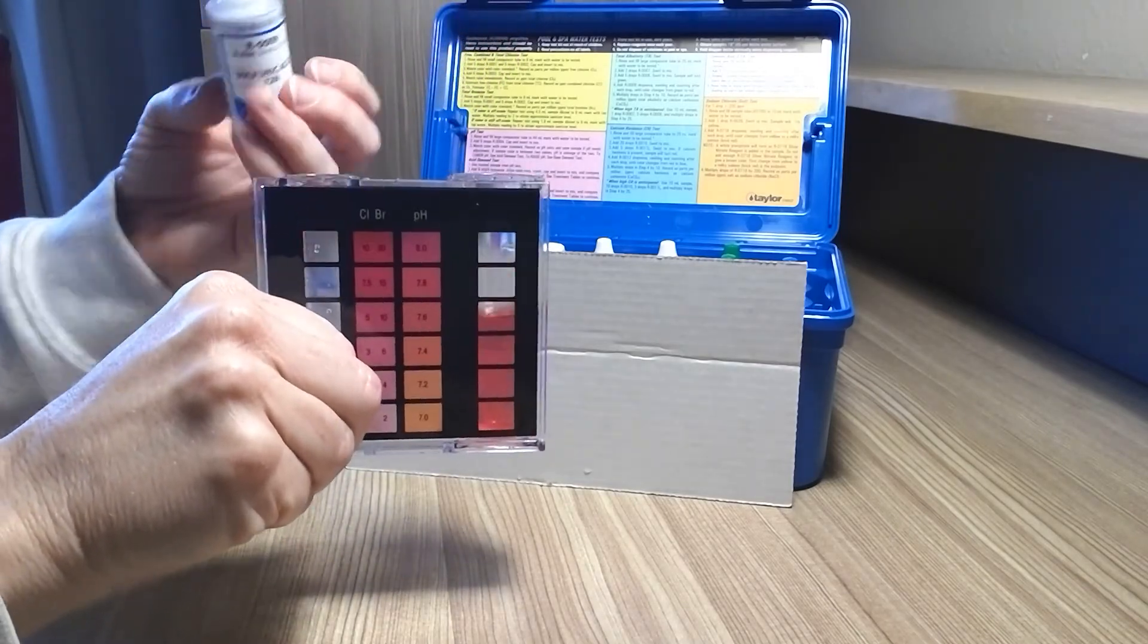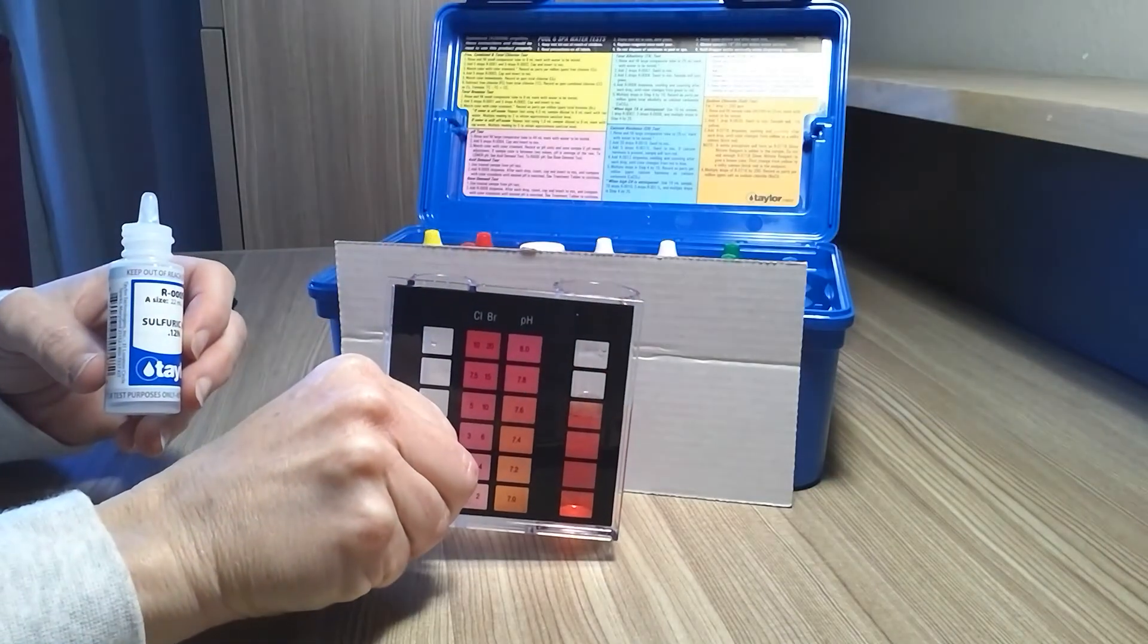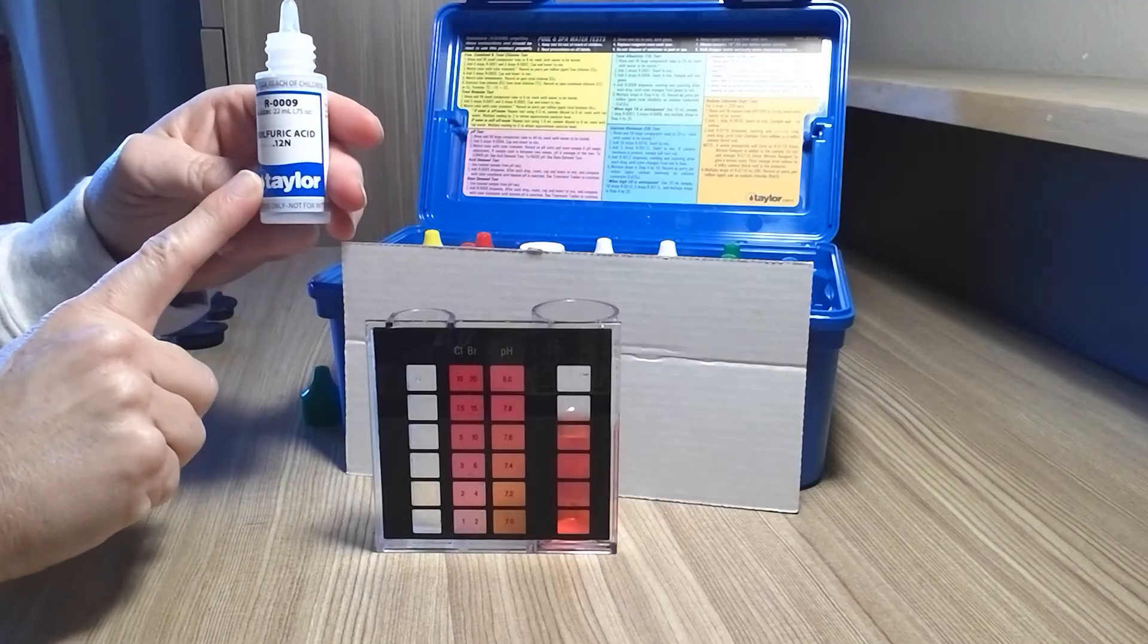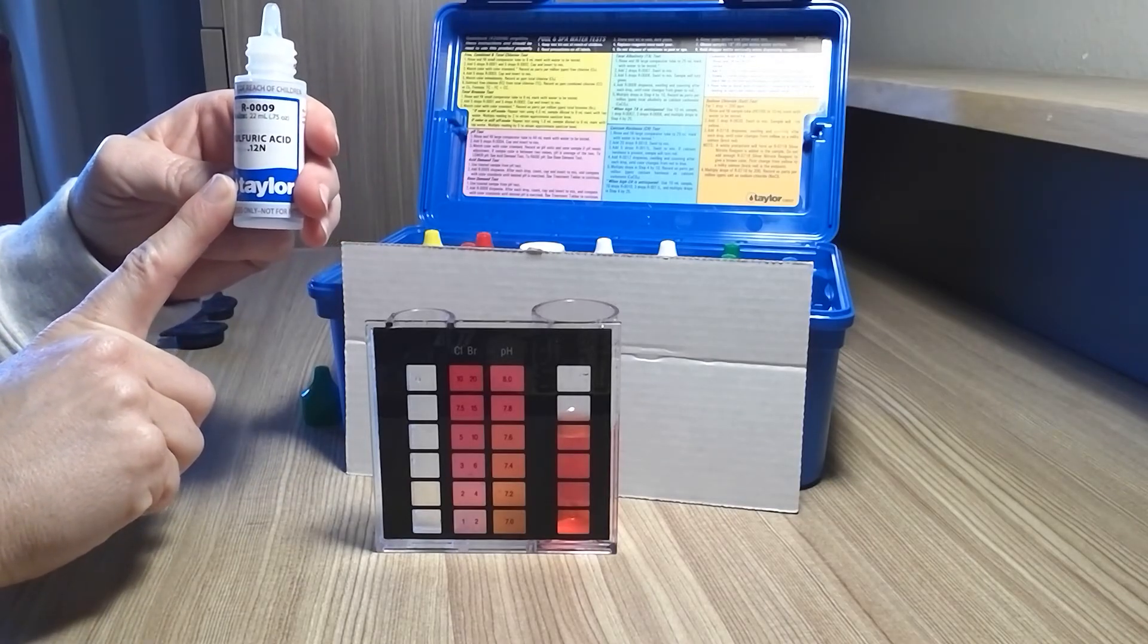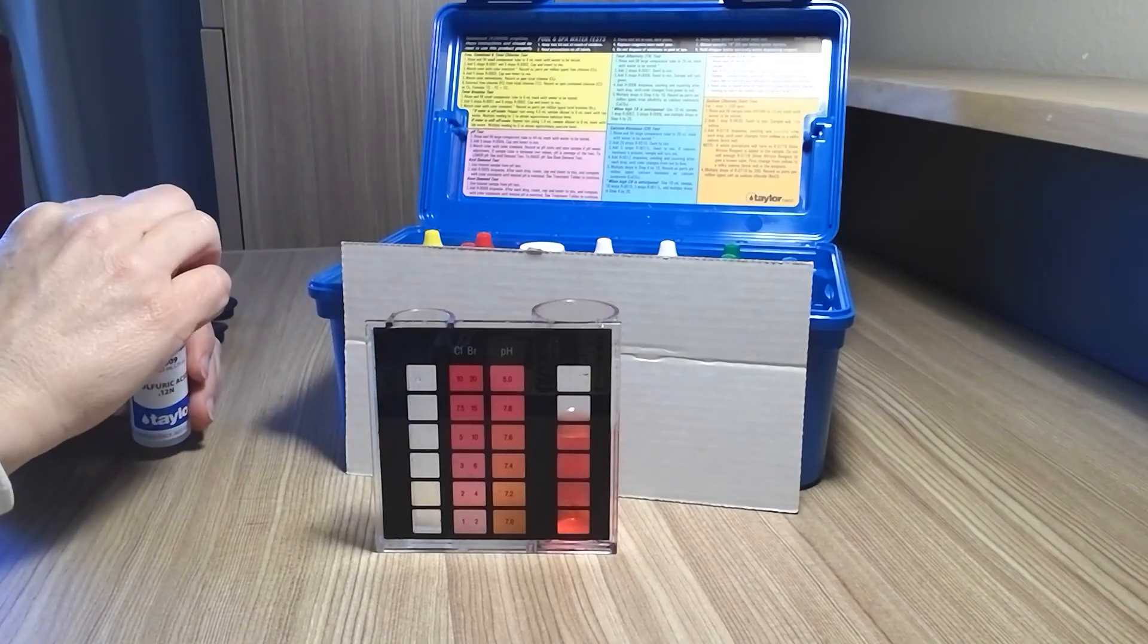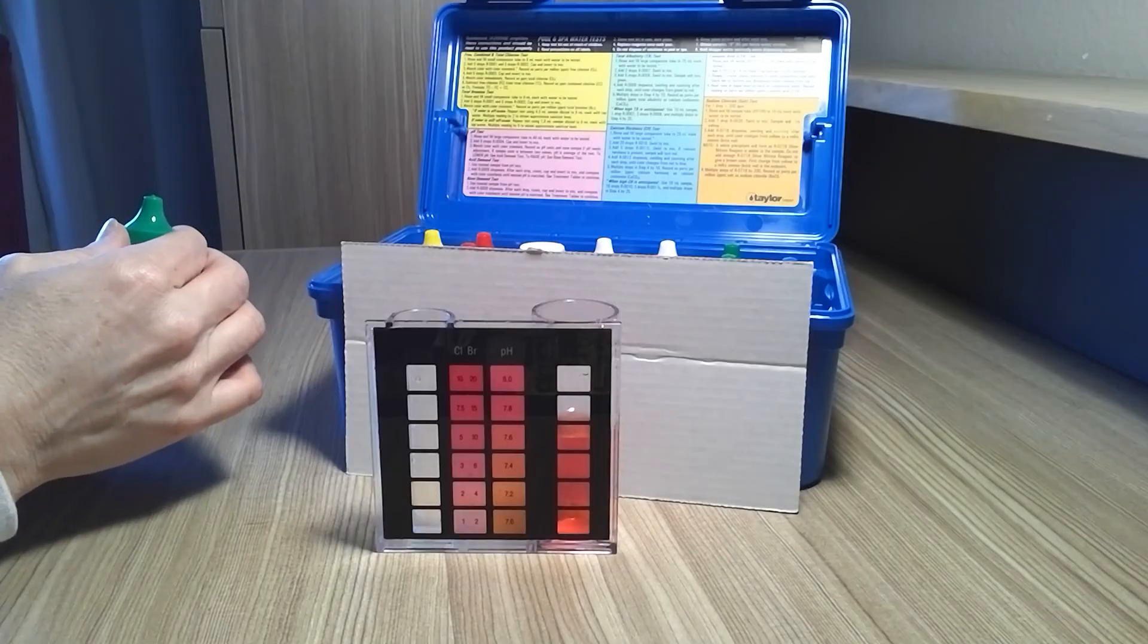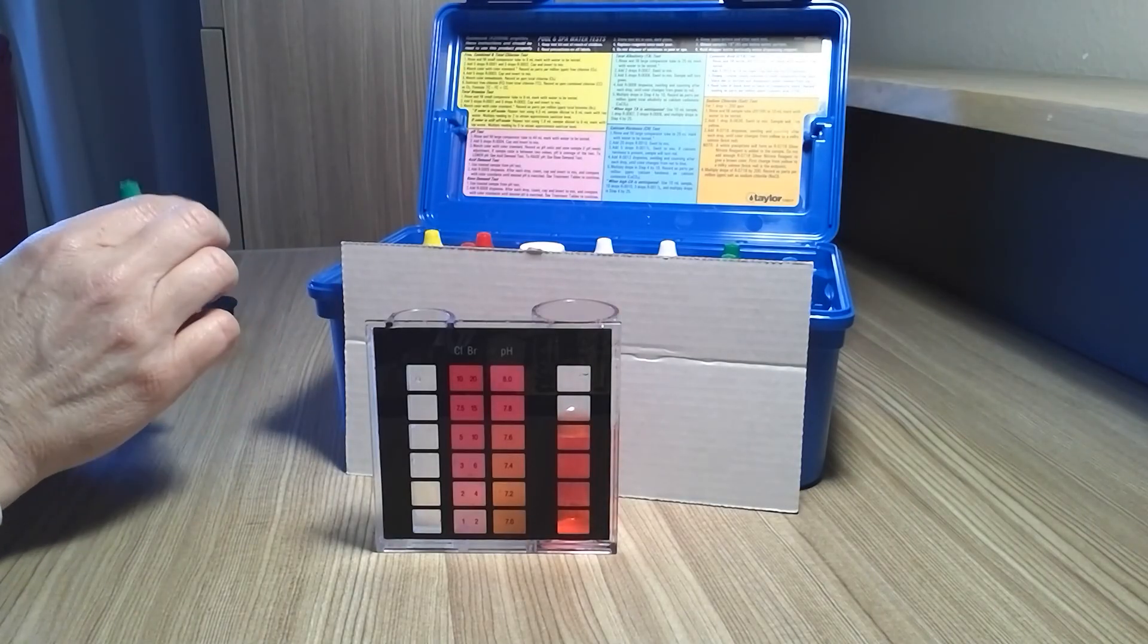So that was 10 drops and you can see it started to go from green to red. You're going to take the amount of drops it took from the R009 times 10, which is 100, and then that's going to give you your range for total alkalinity. Our range we're shooting for is 80 to 120 parts per million, so we're right in the middle.